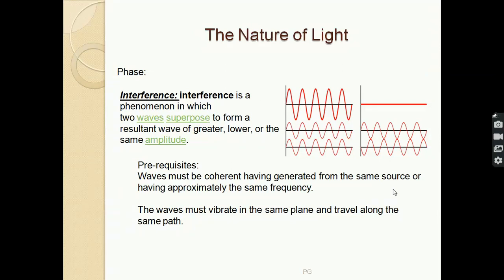Moving on to the next slide, there is a phenomenon of light called interference. Interference takes place when two waves superimpose and they form a resultant wave which has a different amplitude than the waves that are superimposing. Like in this case, this wave and this wave superimpose to form a resultant wave with higher amplitude. There are some prerequisites that must be fulfilled to form interference between two waves. The waves must be coherent - that means they must be generated from a single source or they have very similar frequency - and they must vibrate in the same plane and travel on the same path.